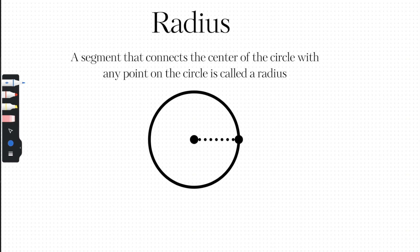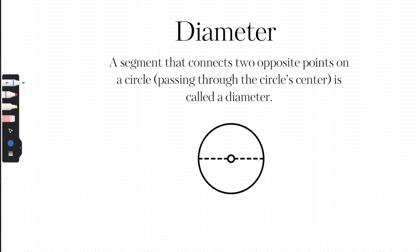The next term is called the radius. A segment that connects the center of the circle with any point on the circle is called the radius. So the distance from the center of the circle directly to the side of the circle — that's called the radius.